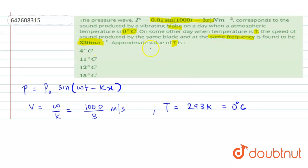So if we have to choose the option, approximately the value of T is what? From the options, we can say 4 degree Celsius or option A is the right answer.